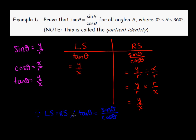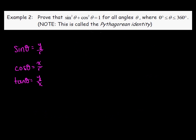We can add a therefore statement: since left side equals right side, therefore we know this statement is true. Here's another one of the basic trig identities. Again, we want to set this up as a left side, right side check, because what we want to show is that the left side — sine squared theta plus cosine squared theta — is equal to the right-hand side, which is 1.